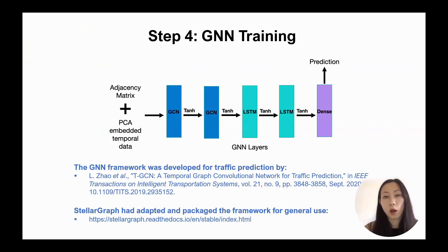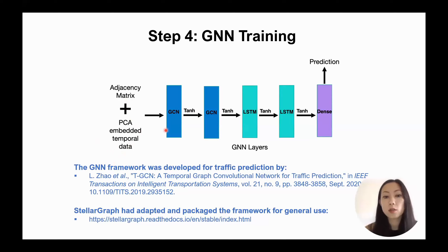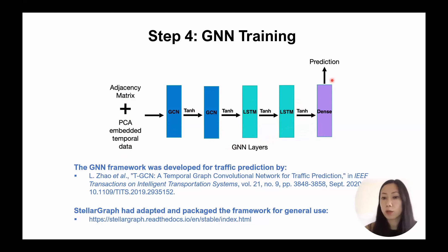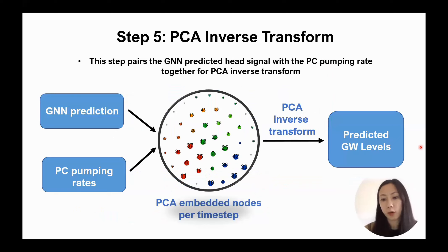Step four is network training. We take the adjacency matrix from our constructed graph plus the principal components of the transient water levels and feed that into our network. The network contains two layers of graph convolutional network and two layers of LSTM — long short-term memory — which is an RNN, followed by activation, dense nodes, and a prediction. This framework was originally developed for traffic predictions. Step five is inverse transform: we take the prediction from the neural network, bring back the component we split in step three, and apply an inverse transform to return to our original space.